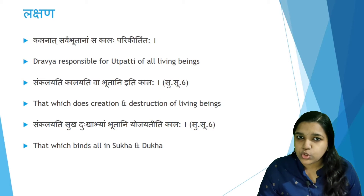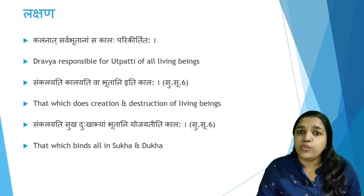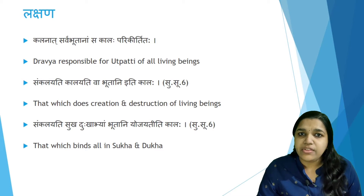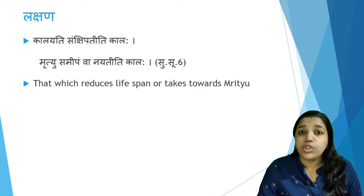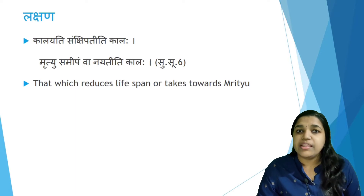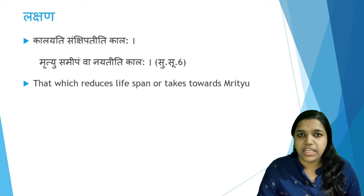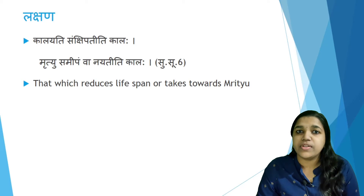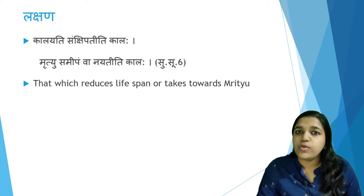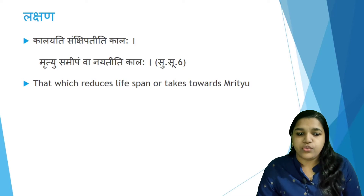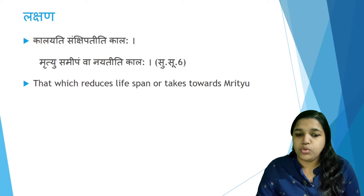So that which is responsible for the Utpati of all living beings, and also for the Utpati and destruction of a living being, and that which binds us towards Sukha, Dukha, etc., is considered to be Kala. Kalayati samshipati di Kalaha; Mrityu samipam vanayati di Kalaha — that which reduces the lifespan of humans or living beings and takes them towards Mrityu is considered to be Kala. As time progresses, the lifespan of living beings gets reduced and we move towards death.